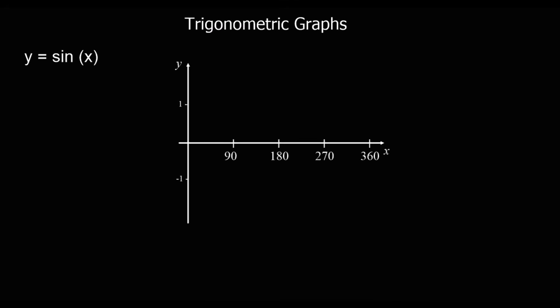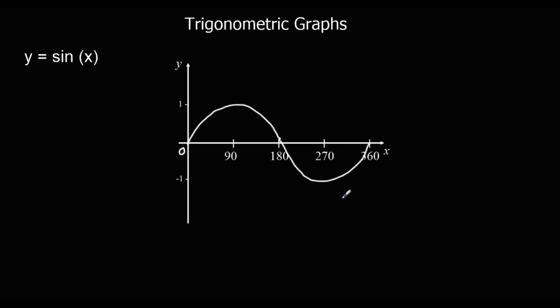In this video, we're looking at trigonometric graphs. We're going to start by looking at the graph of y equals sin x, between 0 and 360 degrees. The sin graph starts at (0, 0), goes up to a maximum at (90, 1), crosses the x-axis again at 180, then has a minimum at (270, -1), and goes back to the x-axis at 360. So we've got this wave, which is the sin graph between 0 and 360 degrees.